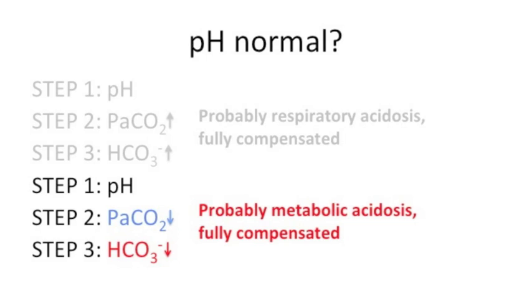Again, if we have a normal pH but the CO2 and bicarbonate are abnormal in the opposite direction to the previous example, think about which is more likely for your patient: a fully compensated metabolic acidosis or a fully compensated respiratory alkalosis — that will depend on the clinical scenario. Okay, that's three easy steps. Now let's go through some examples so you can see just how simple it really is. We'll start by colour coding things to make it a little bit easier, then we'll get rid of the stabilisers and see how you go.